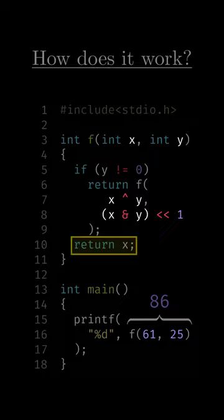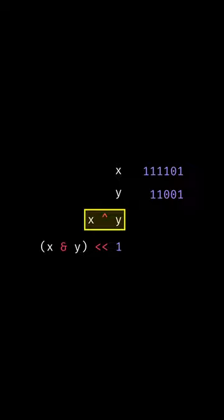To see why it adds the numbers, let's see what the binary operations do. For the first parameter, it calculates bitwise XOR, getting ones where exactly one of the numbers has a one bit.